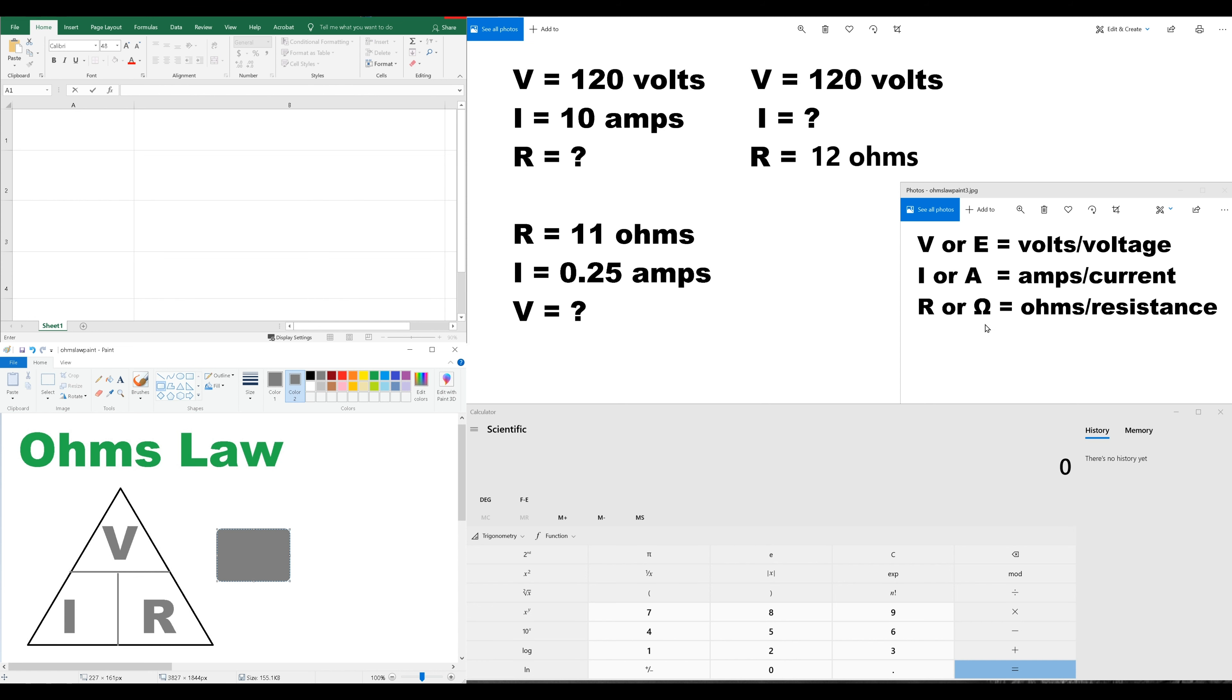Now, sometimes you see these interchanged in formulas. Generally, it's V, I, and R, and V is voltage measured in volts. I is current measured in amps, and R is resistance measured in ohms. So, let's give this a whirl.